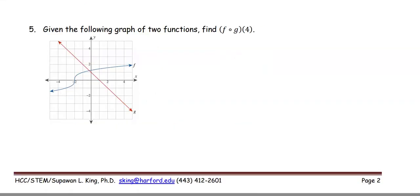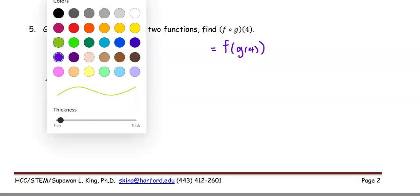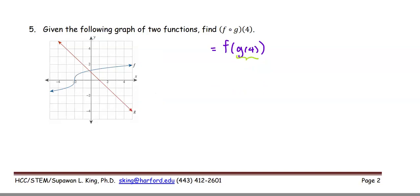In this example, given the graph of two functions, we find f(g(4)). We rewrite the composite function as f(g(4)). From the red graph, g(4) = −3. So the expression becomes f(−3). Then looking at the blue graph of f, the function value at −3 is −1. Therefore, the result for this problem is −1.